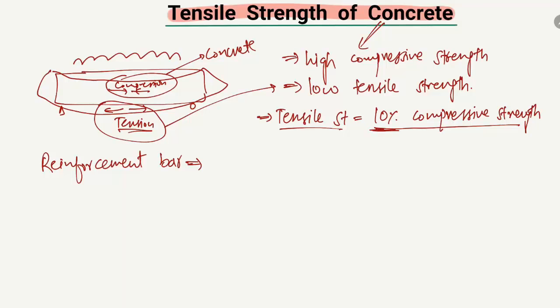In design, the tensile strength of concrete is taken as 10% of the compressive strength. This means that if the concrete has a compressive strength of 30 MPa, the tensile strength is only 10% of that.